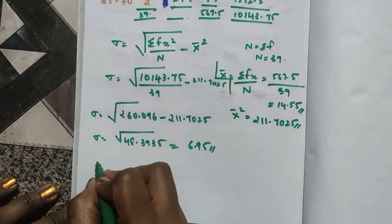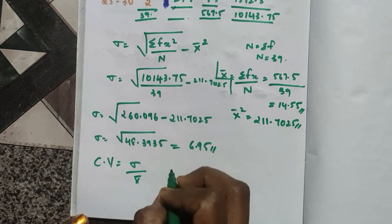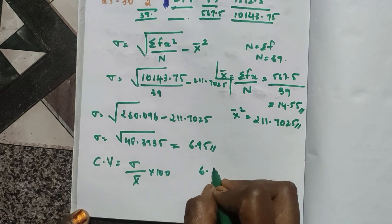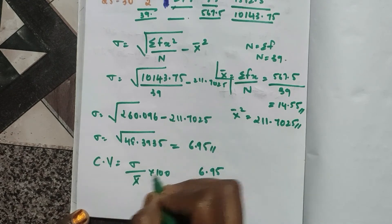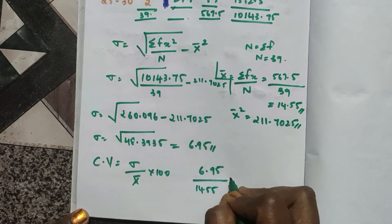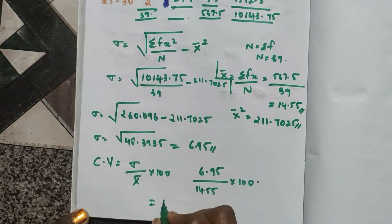Now let's find the coefficient of variation. That is standard deviation divided by x bar into 100. So 6.95 divided by x bar which is 14.55 into 100. After multiplying and dividing I get 47.766.